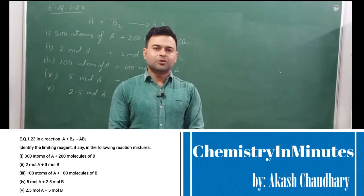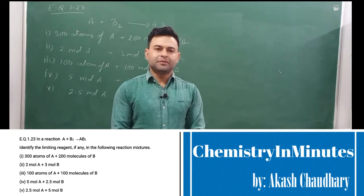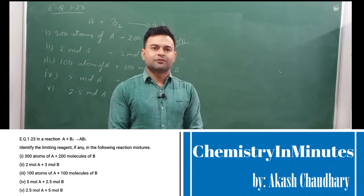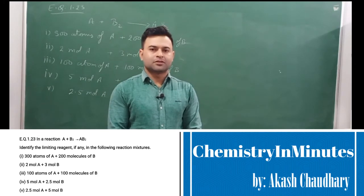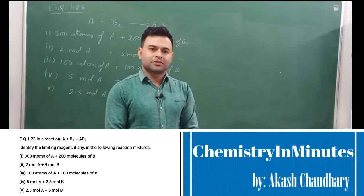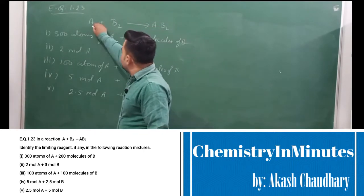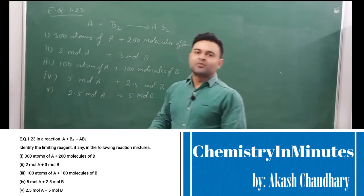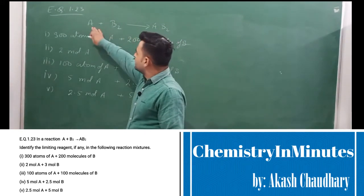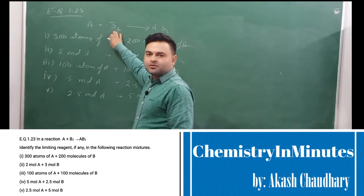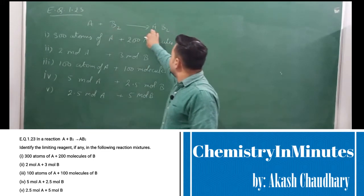Hello my dear students, welcome to Chemistry in Minutes. The question now appearing on your screen is exercise question 1.23. The question is: in a reaction, A plus B₂ gives AB₂, identify the limiting reagent, if any, in the following reaction mixtures. Here we can see that 1 mole of atoms of A reacts with 1 mole of molecules of B₂ to give AB₂.